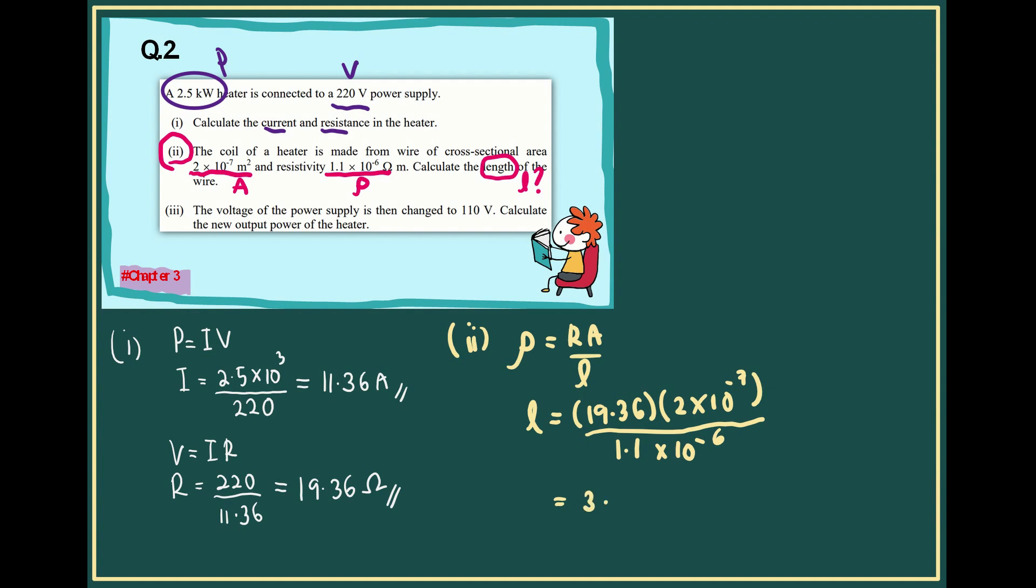Our length is 3.52 meter. The third question: the voltage of the power supply is changed to 110 volt. Calculate the new output power of the heater.